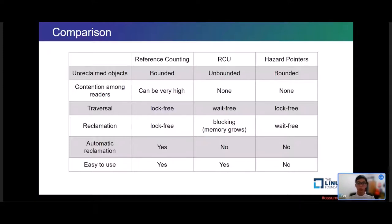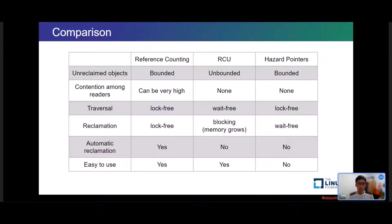This is a table that compares RCU with other common mechanisms. Both RCU and hazard pointers have low overheads for reading and traversal. RCU can support wait-free read operations, but reclamation of unbounded objects can be delayed for as long as a single thread is delayed. So roughly, RCU is simpler to use than hazard pointers, because it protects all protectable objects.